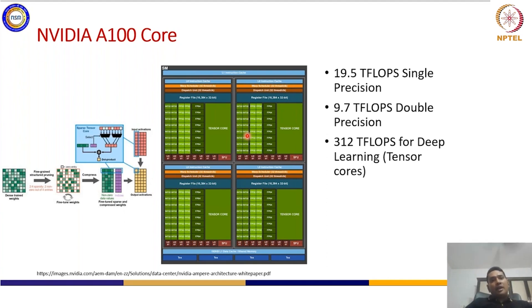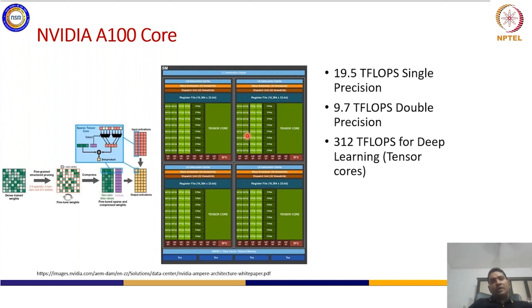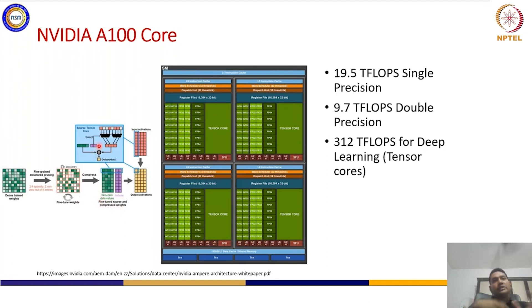The tensor core in the Ampere series is more flexible. There is a notion of sparsity in training or inference of AI benchmarks. Sparsity means you can have multiple weights or parameters very close to zero, interpreted as zero. From a computation point of view, if half the data in a 4×4 matrix is zero, you do not need to compute those multiplications — increasing throughput and energy efficiency manifold. That is why sparsity in matrix multiplication is introduced in tensor cores of the Ampere series.